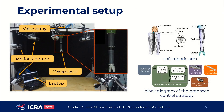We have validated our approach using experiments on the physical soft robotic arm. Our experimental setup consists of a soft manipulator with a gripper, actuated by a proportional valve manifold, and we use a motion capture system to estimate the shape of the robot in real time.